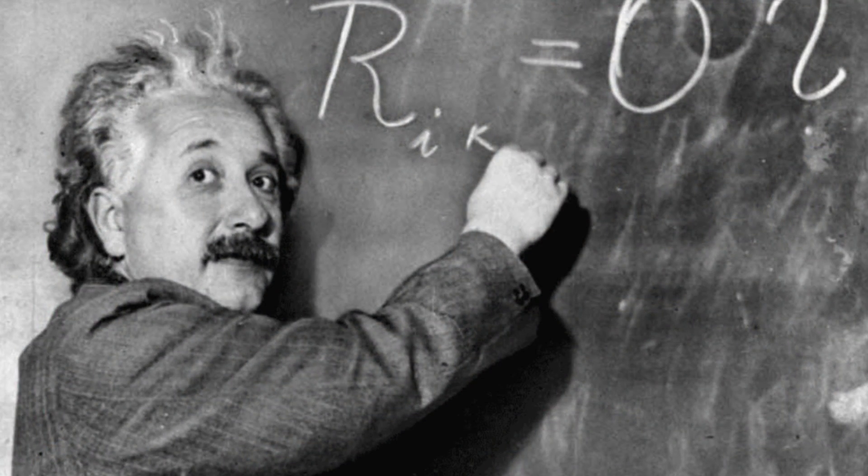Let's talk a little bit about Einstein's theory of relativity. Einstein was really made famous because of his theory of relativity, which is really a combination of two theories: the theory of special relativity and the theory of general relativity.